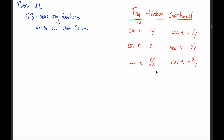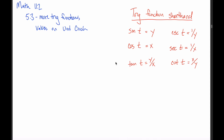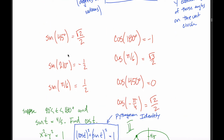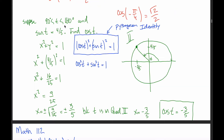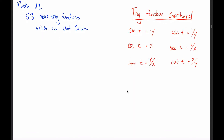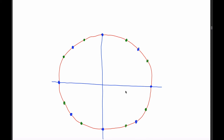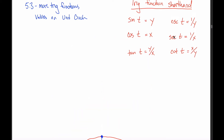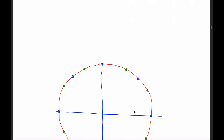If you grant me that you can memorize these six facts, then there's nothing else new in 5.3 that we didn't already do in 5.2. In 5.2 there were really two topics: evaluating trig functions sine and cosine at memorized angles on the unit circle, and evaluating them at non-memorized points where you're told the value of one trig function. Those are the same things we'll do here — we'll start with the memorized points on the unit circle for tangent, cotangent, secant, and cosecant.